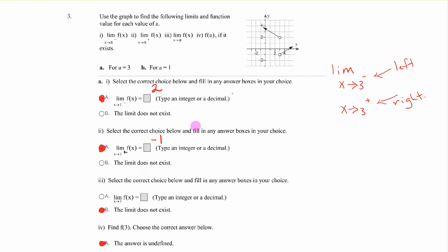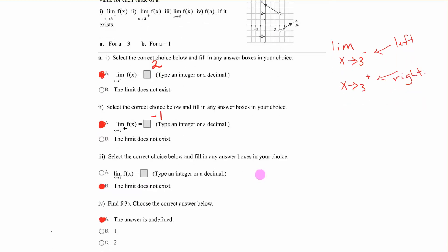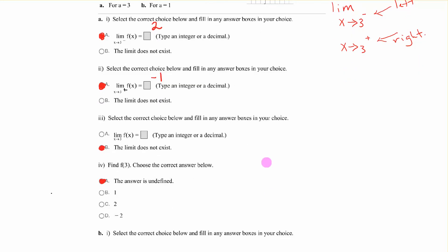And then it says the limit of x, as x approaches 3. Not from left or right, but just in general. Well, it was different on left and right, so it does not exist. Then it says, what is f of 3? Well, here's 3. Is that defined in either of those circles? No, they're open circles. The answer is undefined.